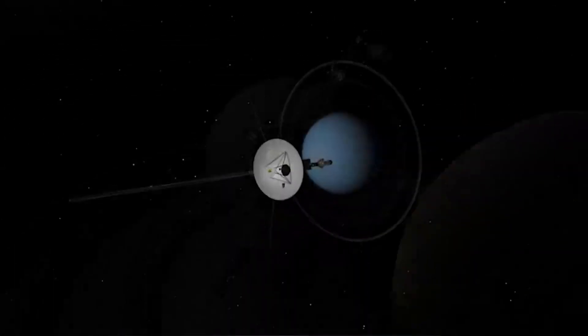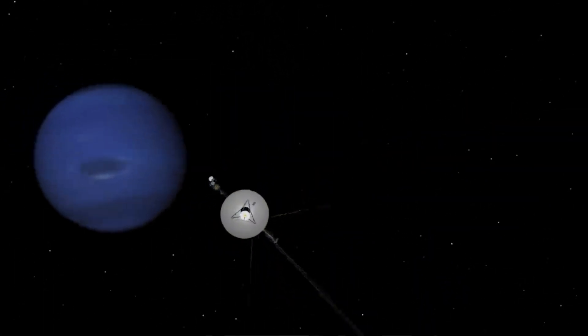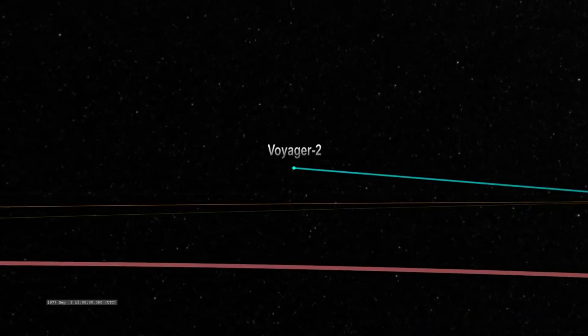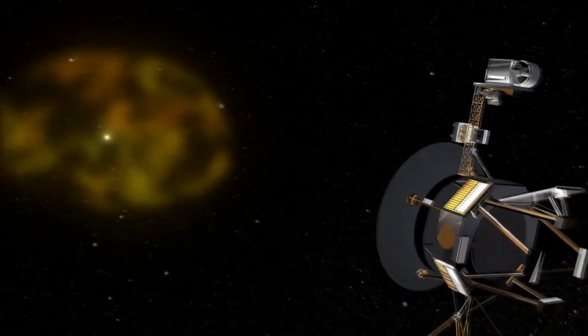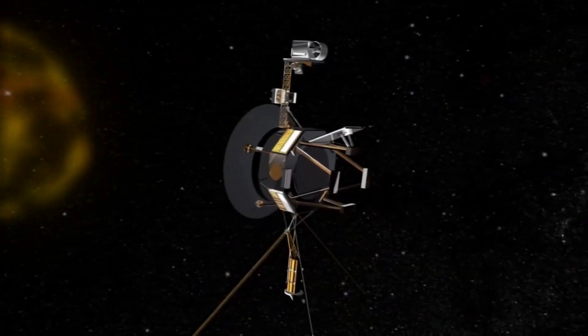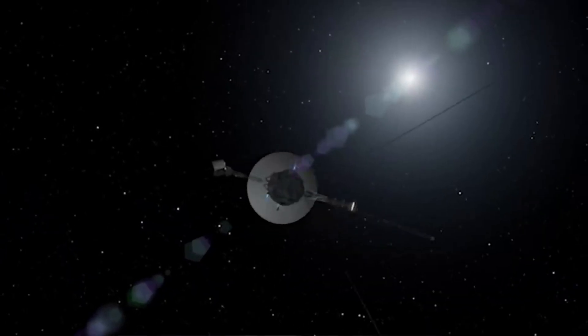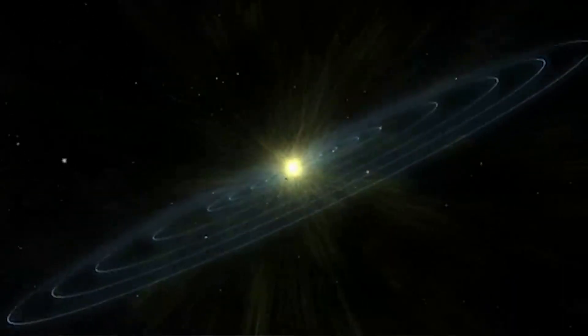By now, Voyager 2 has completed its main objectives and has managed to survive much longer than originally thought. As it flies through interstellar space, who knows what discoveries it could make. Here I'll go more in-depth into the communication dropout, how NASA was able to re-establish communication, the journey of this probe, and more.